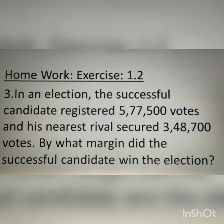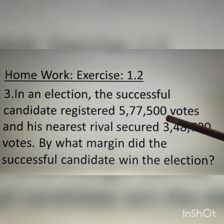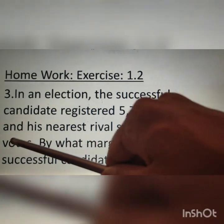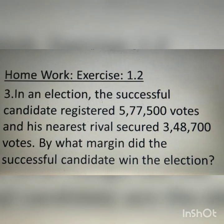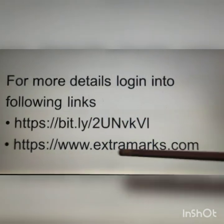Today we have discussed applications of larger numbers in real life, different units, and how to convert one unit into another. I have solved a few questions of exercise 1.2. Please practice and do the homework. Today's homework: NCERT textbook, chapter number 1, exercise 1.2, question number 3 — In an election, the successful candidate registered 5,77,500 votes and his nearest rival secured 3,48,700 votes. By what margin did the successful candidate win the election? For more detailed videos and textbook, please login to the links of Diksha and Extramats.